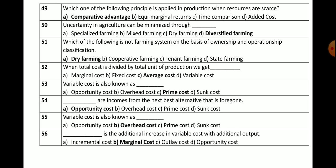Question number 50: Uncertainty in agriculture can be minimized through which method? Options: specialized farming, mixed farming, dry farming, or diversified farming. The correct answer is diversified farming — uncertainty in agriculture can be minimized through the adoption of diversified farming.